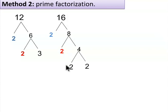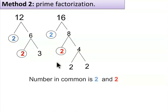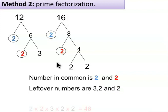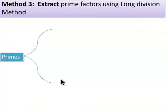Circle the numbers in common. Here, 2 and 2 are common. Leftover numbers are 3, 2, and 2. 2 times 2 times 3 times 2 times 2 equals 48. The red color common 2 and blue color 2 we have taken only once.